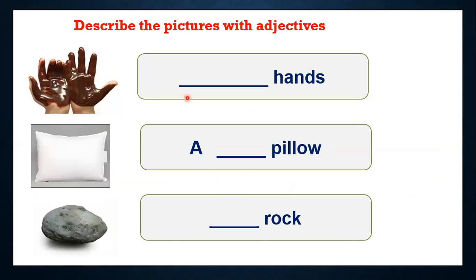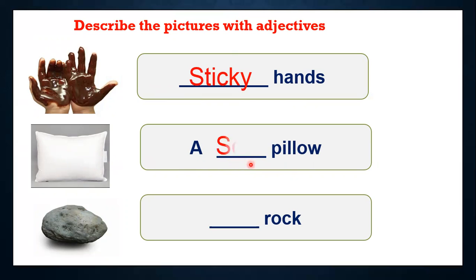Let's see the examples in the worksheet — describe the picture with adjectives. What can we say about these hands? When we touch them, we feel they are sticky. So we can use the word sticky hands — sticky is an adjective. Now, what can we say about this pillow? We can describe this pillow as a soft pillow. When we put our head on the pillow, it will be soft. What can we say about this rock? You can say it's a heavy rock. So with the texture — how we feel when we touch — and with the weight, we can describe an object.